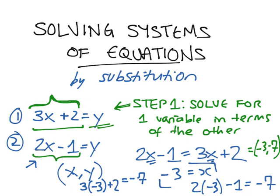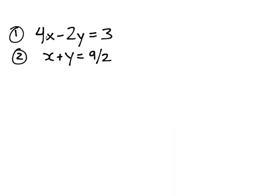So, let's try a harder example. Here are two equations. One, 4x minus 2y is equal to 3. And two, x plus y is equal to 9 over 2. So, substitution. Step 1 is to take one of these equations and solve for one of the variables in terms of the other. So, the easiest equation to choose here would be the second equation.